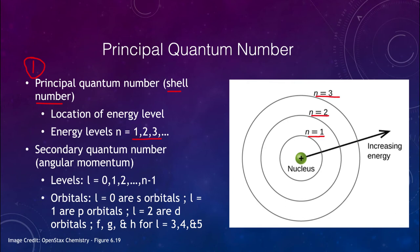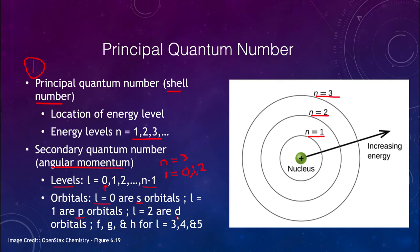The second quantum number is the angular momentum quantum number, l, which gives levels starting at zero and going up to one less than the principal quantum number — that's n minus one. So if n is three, you can have l equals zero, one, and two. For l equals zero those are the s orbitals; l equals one are the p orbitals; l equals two are d orbitals; and we use f, g, and h for l equals three, four, and five.